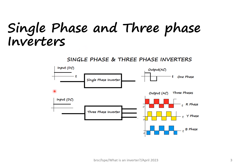An inverter is a device which converts the input DC voltage into an output bidirectional AC voltage. There are single-phase and three-phase inverters. In the case of a single-phase inverter, the input is DC and the output is a bidirectional alternating waveform — there is only one waveform available. Whereas in a three-phase inverter, the input is DC and the output has three waveforms each displaced from one another by 120 degrees.